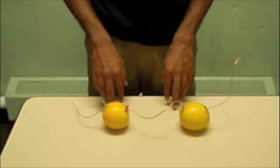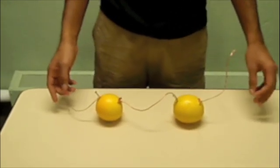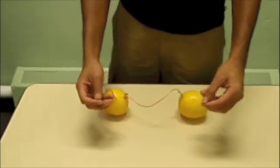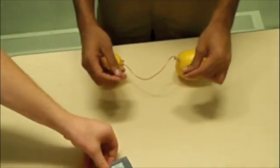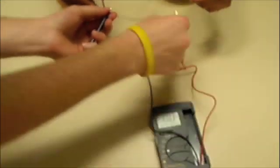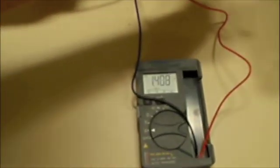These two lemon batteries are going to act as our voltage source to light up the light. What we're going to do now is measure the voltage using the digital multimeter, and it should be approximately double the voltage of the first battery.